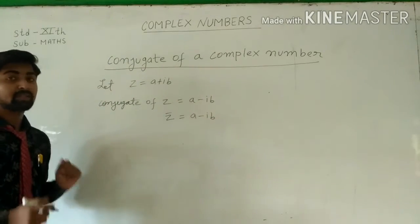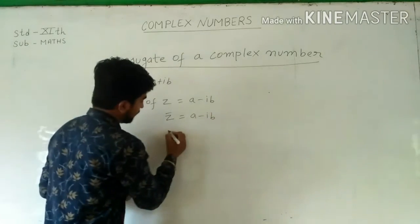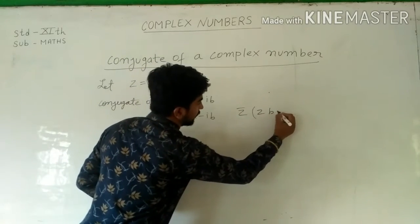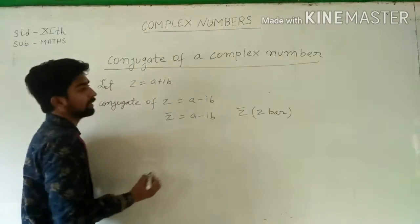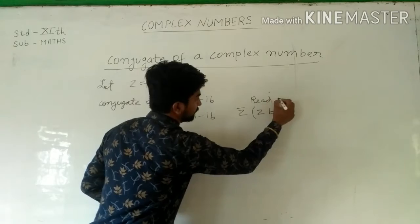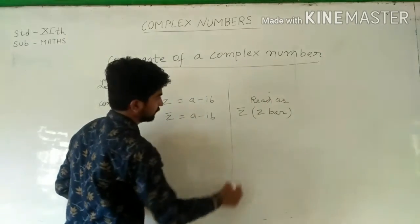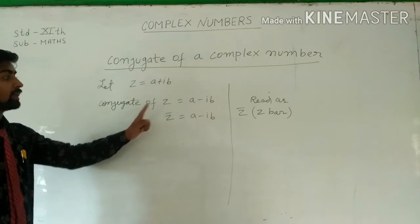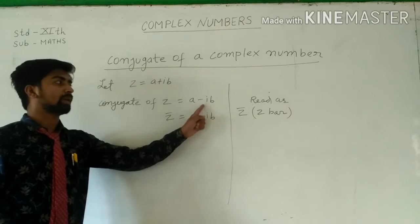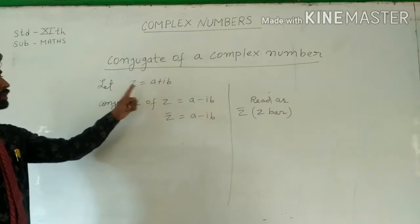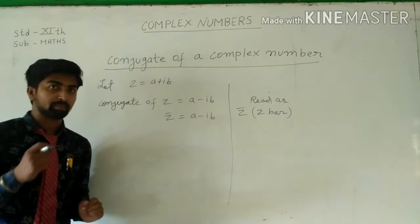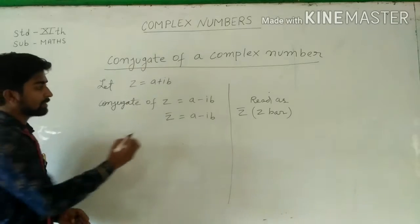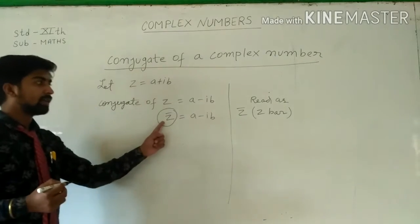It is read as z-bar. So, the conjugate of a complex number z is defined as a minus ib, when z equals a plus ib. The conjugate of z is denoted as z-bar.